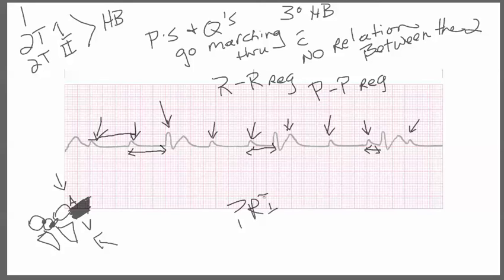But when you look at the PR interval, that PR has absolutely no correlation. Look here and you compare it. Well it's not supposed to get narrower. If it's going to do anything it's going to get wider. So when you're looking at this you're like okay, this is a third-degree heart block.